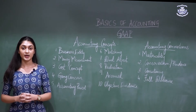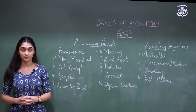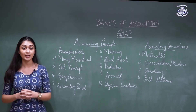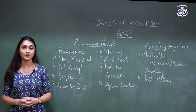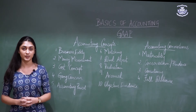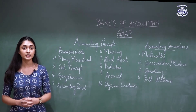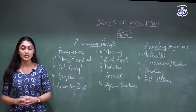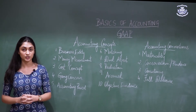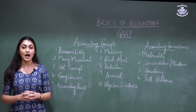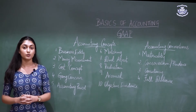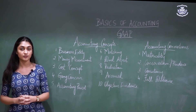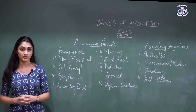The dual aspect concept states that every transaction has two aspects: the receiving aspect and the giving aspect. The accounting equation — assets equals capital plus liabilities — is derived from this concept.